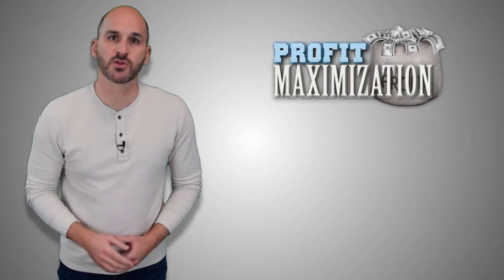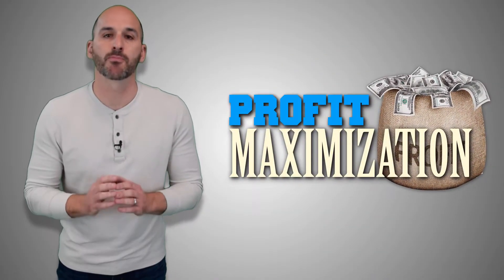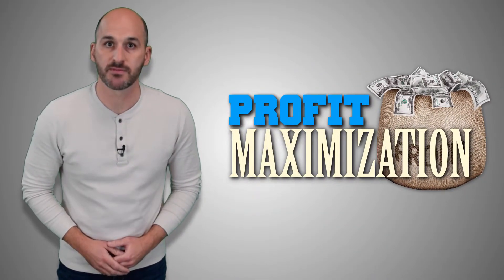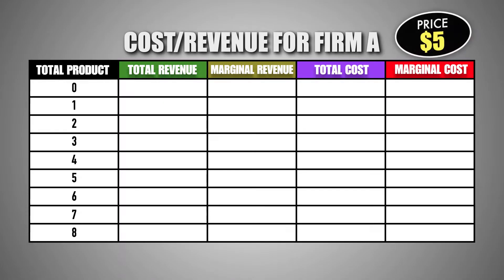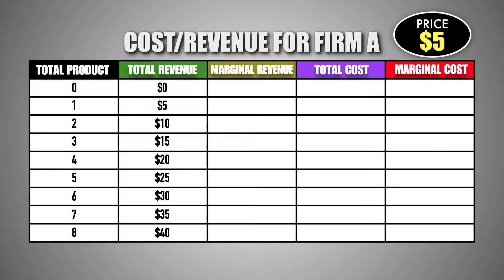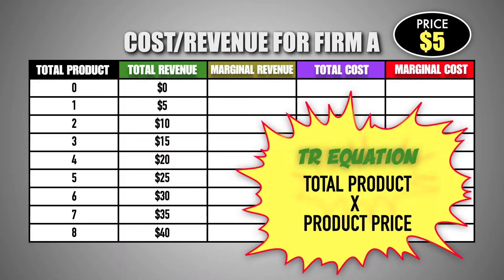Let's take a closer look at how firms determine their profit-maximizing level of output. Provided is the cost and revenue data for a typical firm in the market for good M. Assume that the firm can sell every unit of good M at a set market price of $5. We can see the total revenue for the firm after selling each unit of good M, which is equal to the quantity of output sold multiplied by the market price per unit.